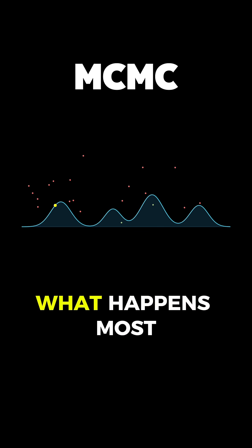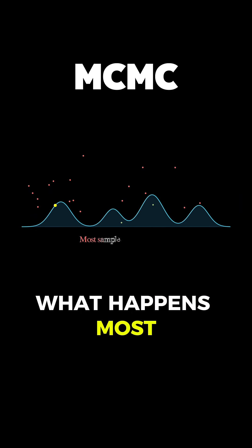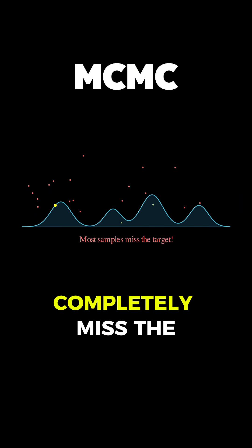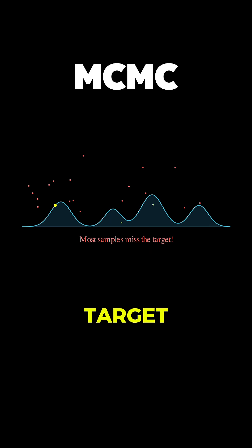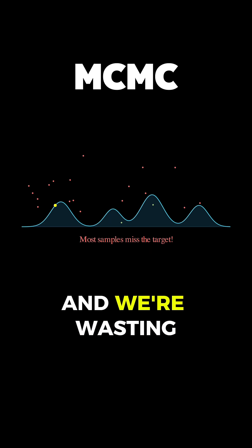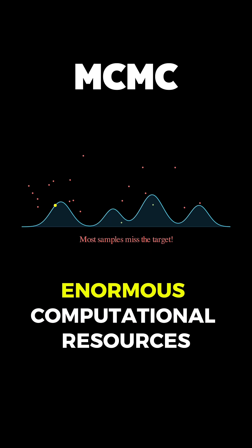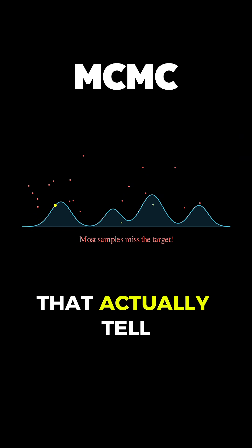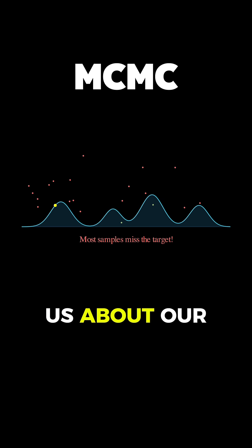But look at what happens — most of our samples, those red dots, completely miss the target, and we're wasting enormous computational resources just to get a few useful green points that actually tell us about our distribution.